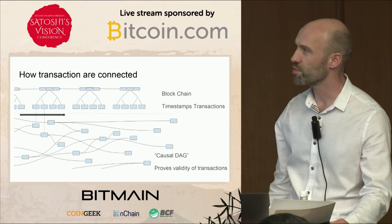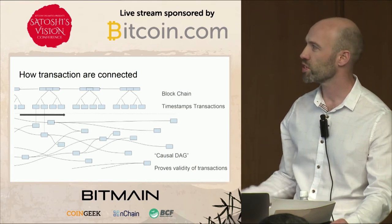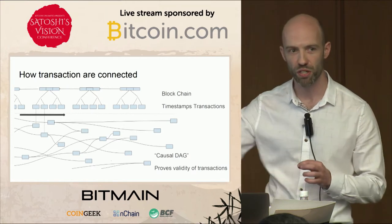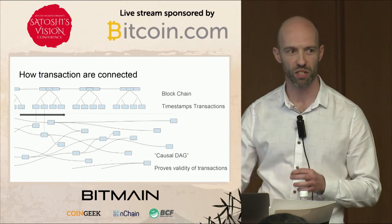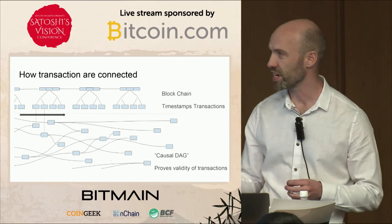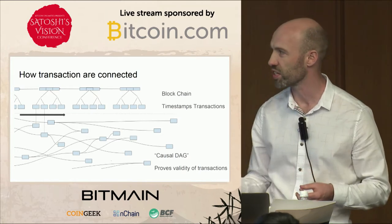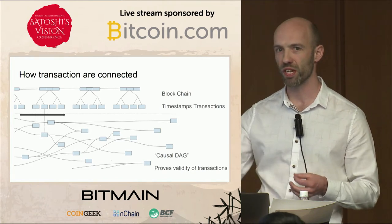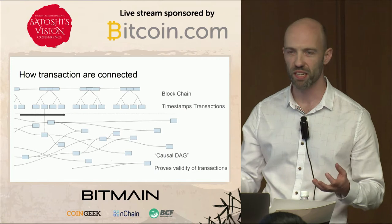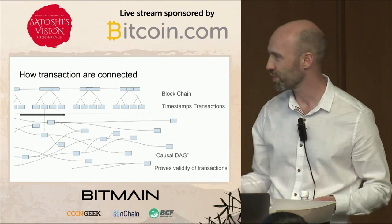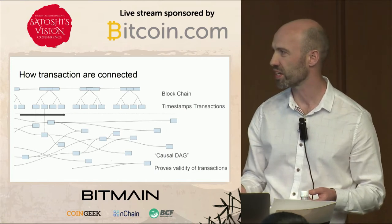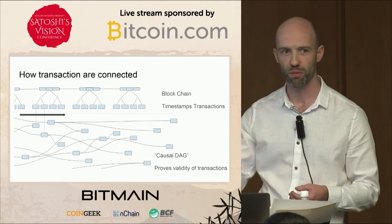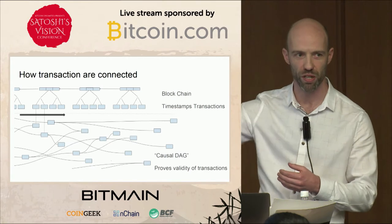That puts a timestamp on transactions. But there's also another way that the transactions are connected together. Each transaction has pointers to the outputs from other transactions so that when you spend the money, it points to where that money came from. So this proves that it's essentially a causal DAG — a directed acyclic graph. It all goes in one direction and proves that when you spend money, it's based on where the money was before.